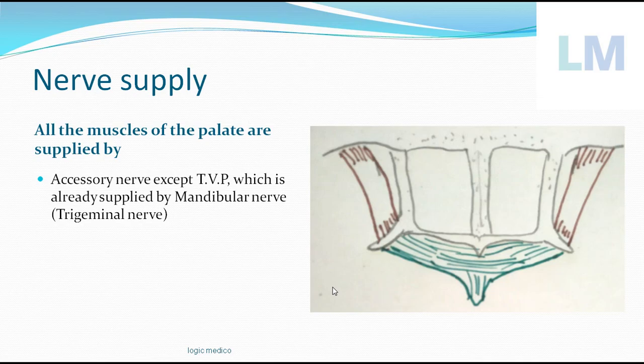Tensor veli palatini is supplied by the mandibular nerve, a branch of the trigeminal nerve, because it is more closely related to the mandible (lower jaw). Developmentally, this muscle is derived along with the muscles of mastication from the mandibular arch, and since the muscles of mastication are also supplied by the mandibular nerve, tensor veli palatini follows the same nerve supply — unlike all other palate muscles, which are supplied by the accessory nerve.